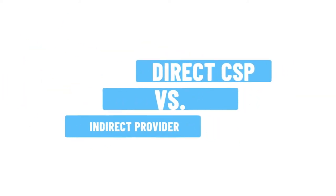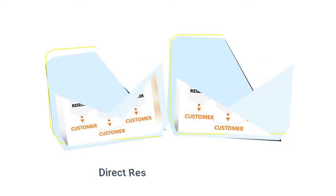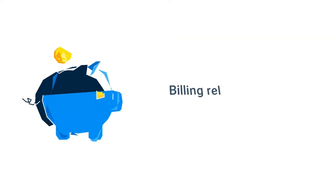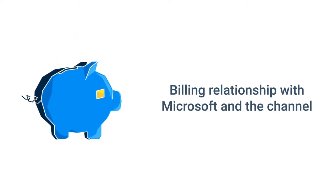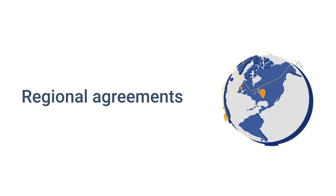What is the difference between a direct CSP reseller and an indirect provider? Direct CSPs are reseller organizations selling Microsoft products to end customers, while indirect providers are Microsoft distributors that purchase Microsoft products to sell to customers through a network of indirect resellers. Both organizations have a direct billing relationship with Microsoft, established after a lengthy application process and CSP agreements that cover regional markets defined by Microsoft.